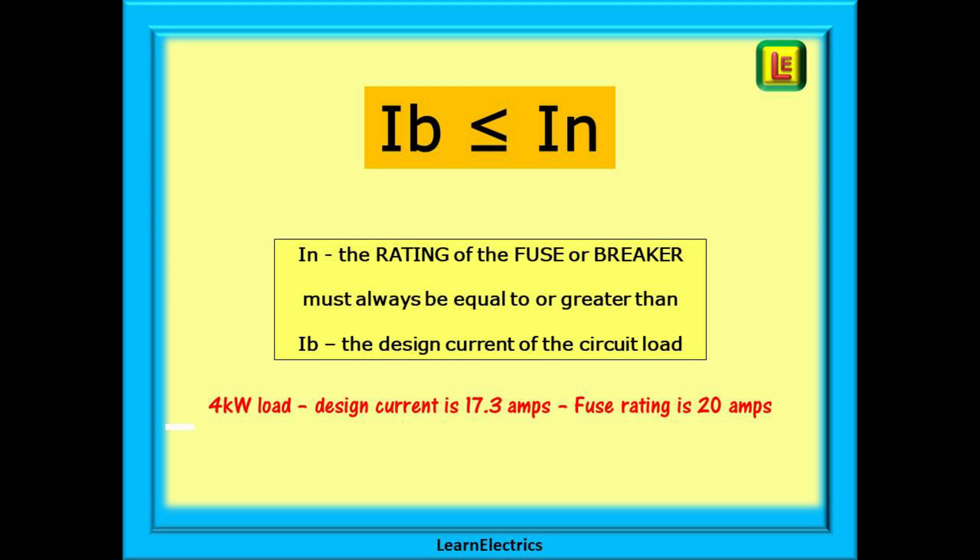IB must not be more than IN. Or another way, IN, the rating of the fuse or breaker, must always be equal to or greater than IB, the design current of the circuit load. A 4kW load has a design current of 17.3 amps, and we will need a 20 amp fuse or circuit breaker.